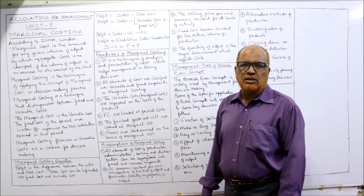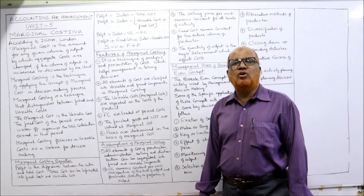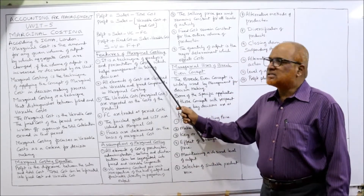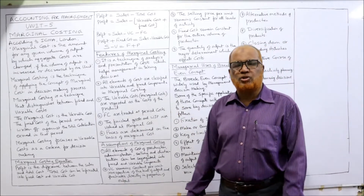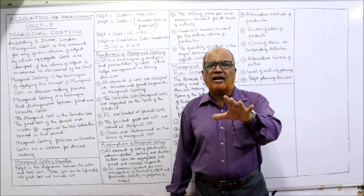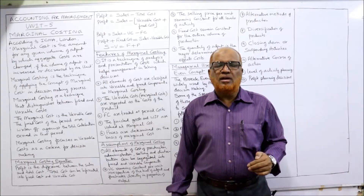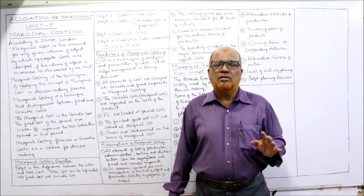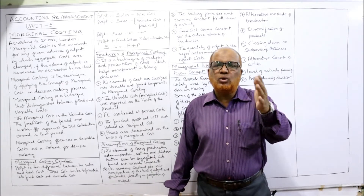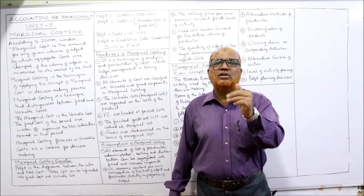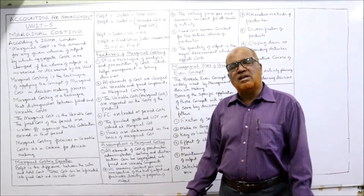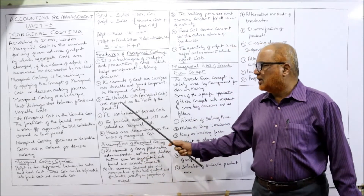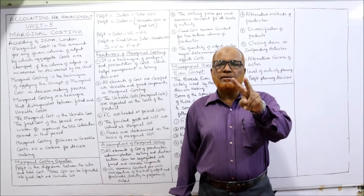Now the features of marginal costing. In examination you may get a theory question on this. The first feature: it is a technique of analysis and presentation of cost which helps management in decision making — marginal costing is a handy tool for management to take decisions. The second feature: all elements of cost are classified into fixed and variable cost. The first requirement of marginal costing is that total cost must be divided into fixed and variable. Variable cost or marginal cost is regarded as the cost of the product.